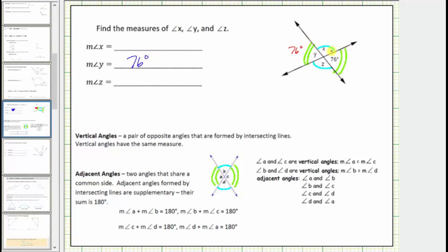Next, notice that angle X and the given angle that measures 76 degrees are adjacent angles and are also supplementary. This means the measure of angle X plus 76 degrees must equal 180 degrees. Therefore, the measure of angle X must equal 180 degrees minus 76 degrees, which equals 104 degrees.